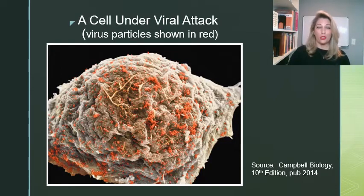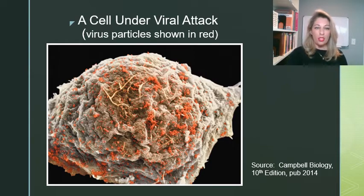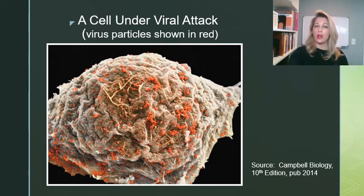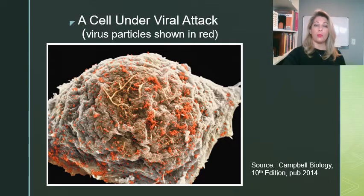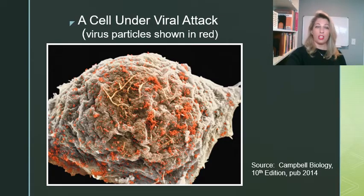Here's a pretty cool picture of a cell under viral attack. If you look really closely, you can see these little red spots — those are actually virus particles. This great big thing is the cell, and all these little bitty red specks are actually a flu virus in the process of budding out of the cell, so the cell itself is probably full of the virus. This picture is from the textbook Campbell Biology published by Pearson Education.